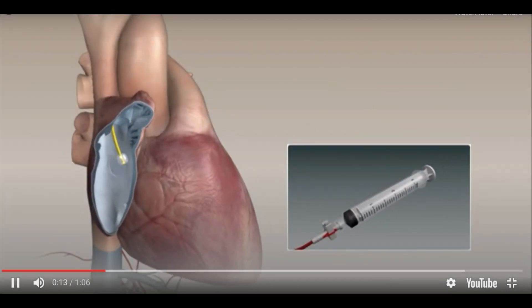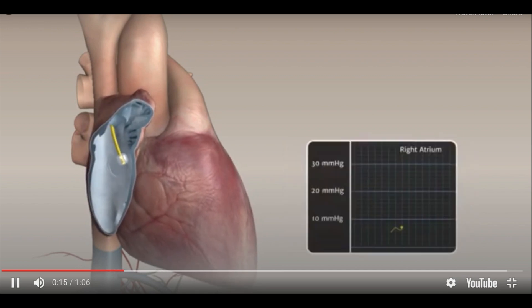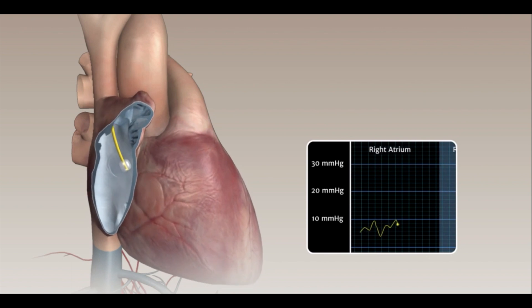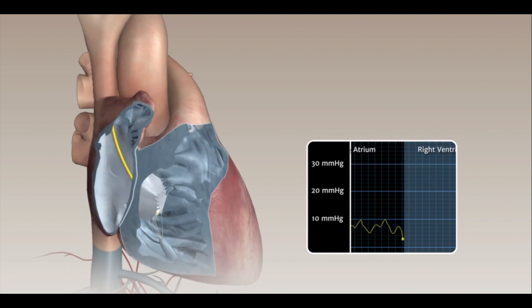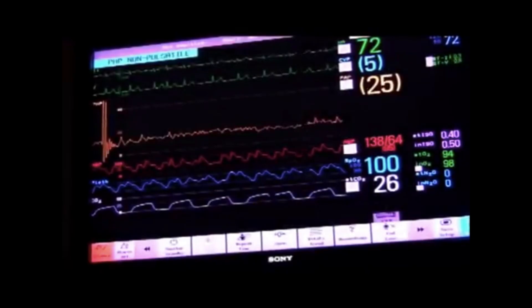The pulmonary artery catheter has a balloon tip on the end. The balloon allows the catheter to be carried by the flow of the blood to help the catheter move smoothly through the blood vessels and into the right chamber of the heart.